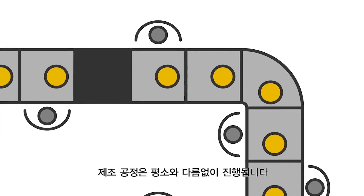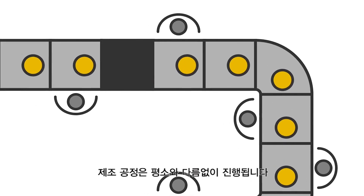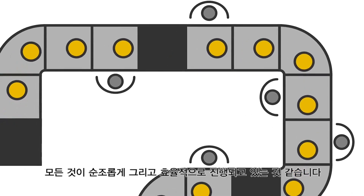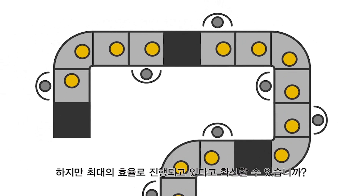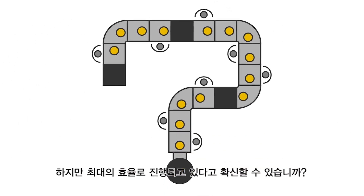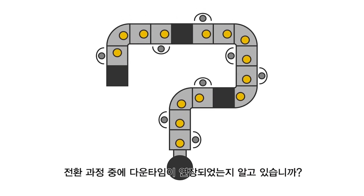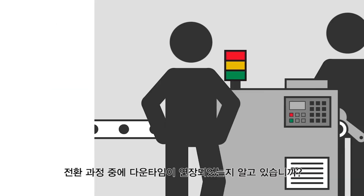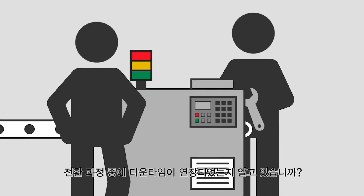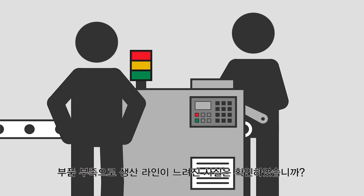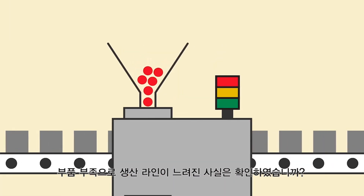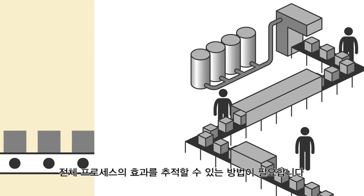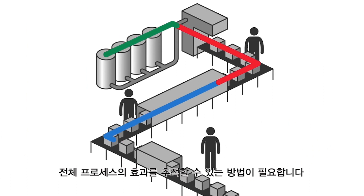Your manufacturing operation is rolling as usual. Everything seems to be running smoothly and efficiently. But are you sure you're running as efficiently as you could be? Do you know if there's been an extended downtime during a changeover? Do you know if your production line has slowed due to a shortage of parts? You need a way to track the effectiveness of your entire process.